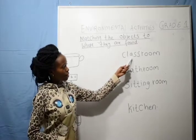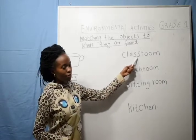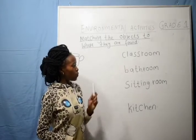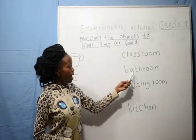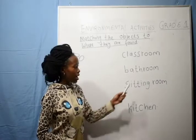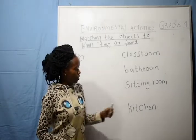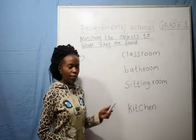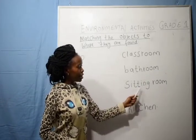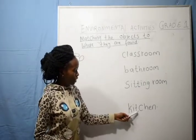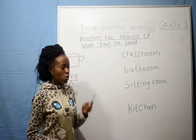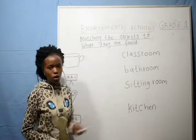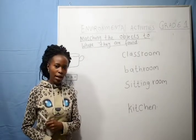So let's read. Very good. This one is a classroom. Then we have bathroom. Then we have sitting room. Then we have kitchen. So now we are going to match the items to where they belong. Are we together? Yes.